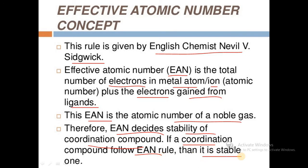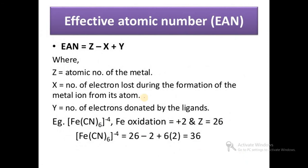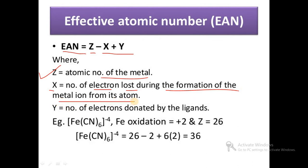According to Sidgwick, the effective atomic number is represented as: EAN = Z − X + Y, where Z is the atomic number of the central metal ion, X is the number of electrons lost during the formation of the metal ion from its atom, and Y represents the number of electrons donated by the ligands, that is the contribution of the ligands.